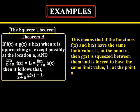Okay the squeeze theorem, theorem letter B. If f of x is less than or equal to g of x and g of x is less than or equal to h of x when x is approaching a, except possibly at the location a, and the limit as x approaches a of f of x is equal to L and it's also equal to the limit as x approaches a of h of x, then it follows that the limit as x approaches a of g of x is also equal to L.